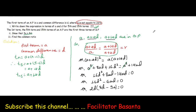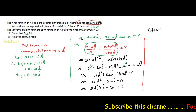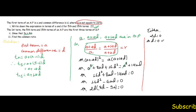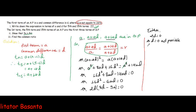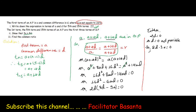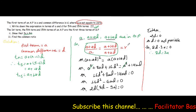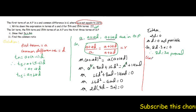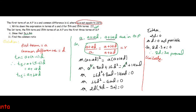Factoring out 2d: 2d(8d minus 3a) equals zero. As given in the problem, d is not equal to zero, so 2d equals zero is not possible. Therefore, 8d minus 3a equals zero, which gives us 8d equals 3a. This is proved.